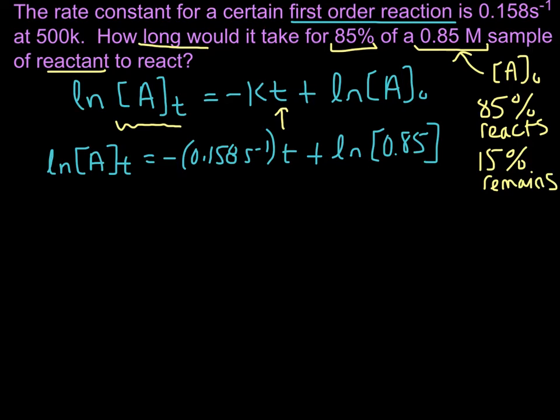We're going to turn it into a decimal. So 0.15—that's the fraction of our original sample, 0.85 molar, that remains at this time. We multiply 0.15 times 0.85 molar. So [A]ₜ, we just found out,